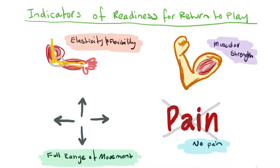Finally, one of the most obvious indicators of readiness is pain. If the athlete is not showing any levels of pain, this clearly indicates they are in some way ready to return to play. We know that pain is associated with the inflammatory response — in those first two stages there are high levels of pain — and if an athlete is still experiencing pain, they haven't completed the rehabilitation process effectively and are still in those early inflammatory stages.